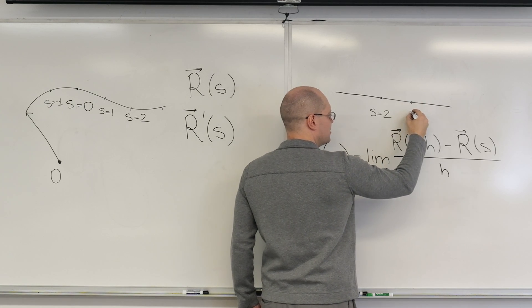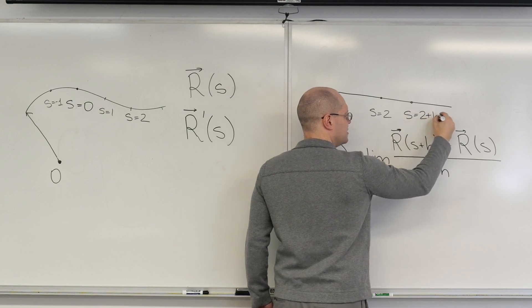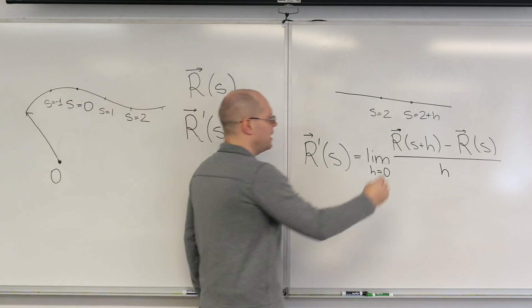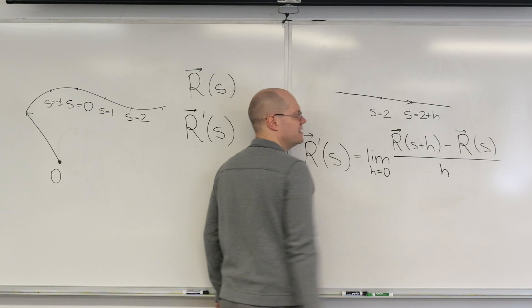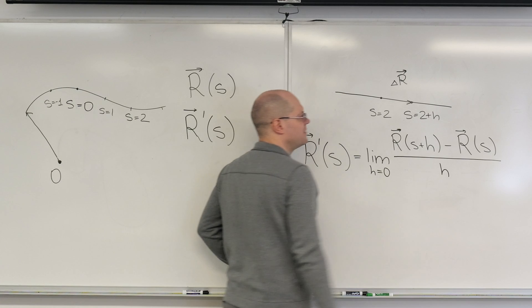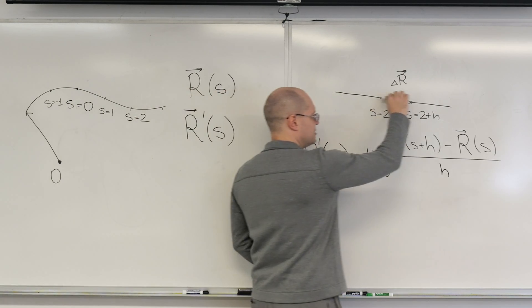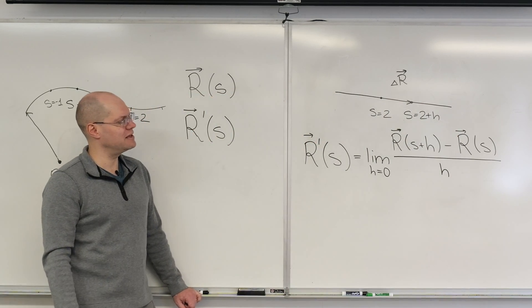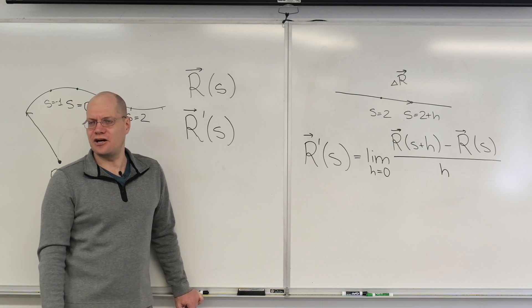And so this is R of S plus H minus R of S. There it is. Delta R. And in the next step, we're going to be dividing it by H. We already know its direction. It's going to point this way for every H, because we've zoomed in sufficiently enough. The only question is, what's the length of Delta R?